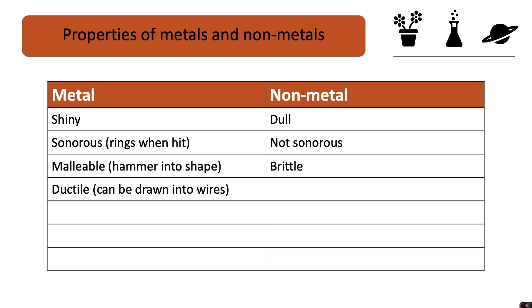Metals are ductile, which means that they can be drawn into wires. But non-metals are brittle. Again, these non-metals would just break apart, so you couldn't actually draw them into wires.